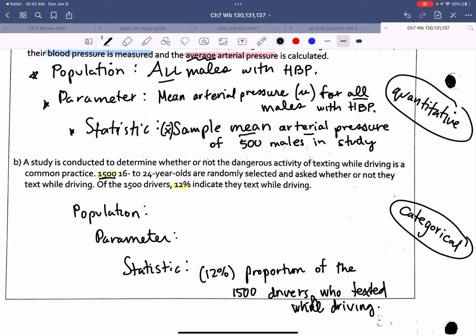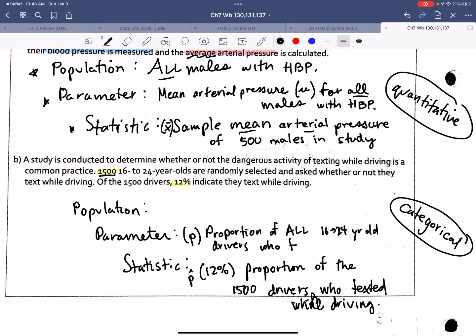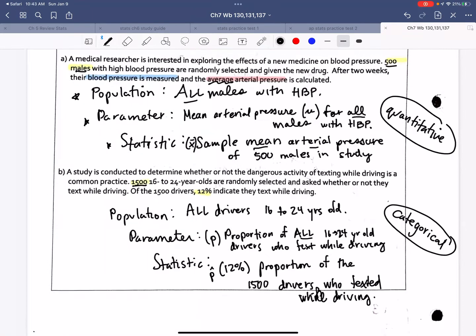So what is my parameter? So we can think of this as my P hat. What's my parameter? That's my P. That's my proportion of all 16 to 24 year old drivers who text while driving. And what's my population? Well, I'm interested in making an inference about all drivers in that age range.